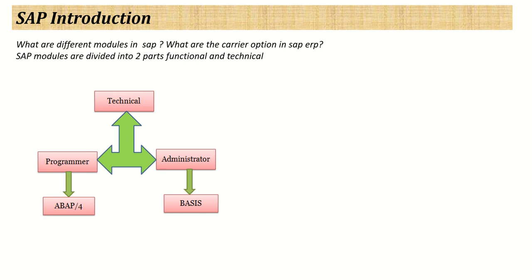This was a high-level overview of the SAP system — what is SAP, what is ERP, and the different modules. In our next session, I will explain more details on the ABAP side and ECC versus the HANA product of SAP. Thank you, we'll see you soon.